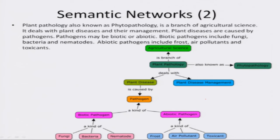Plant pathology, also known as phytopathology, is a branch of agricultural science. The concepts here are plant pathology, phytopathology, and agricultural science. We draw these concepts as rectangles in the concept map. Plant pathology is connected to phytopathology by the 'also known as' relationship, and to agricultural science by the 'is a branch of' relationship.